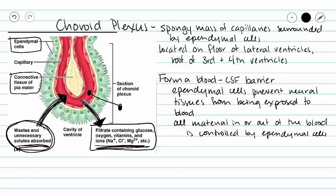Our ependymal cells have one more job. Some ependymal cells have much longer extensions — their cilia. When our cilia beat, they move our CSF, and this is how our CSF gets circulated around our central nervous system.